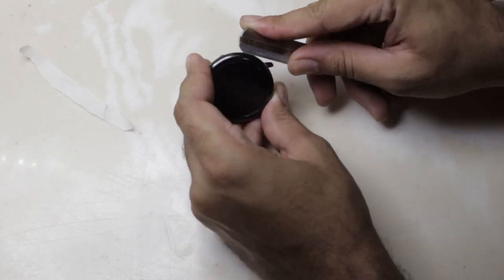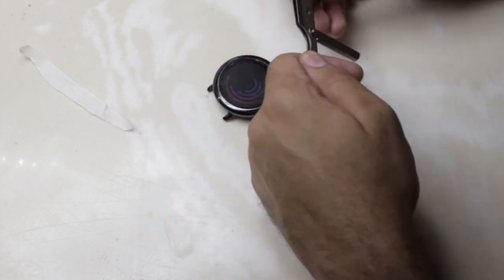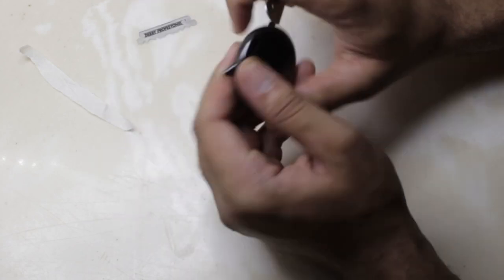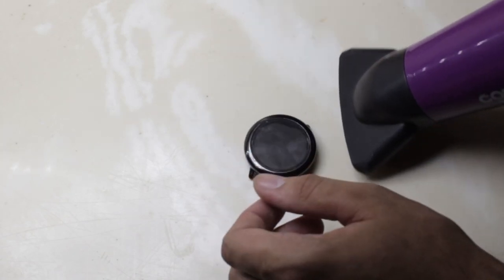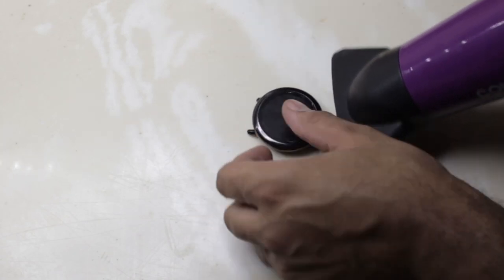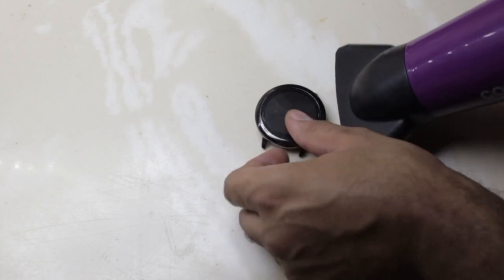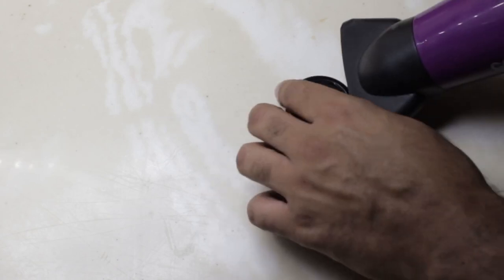After searching the forums I found out that the battery drain issue was caused by water getting inside of the watch and corroding the barometer sensor which led to a constant power draw and it also explained why the watch felt warm. So it was shorting out.